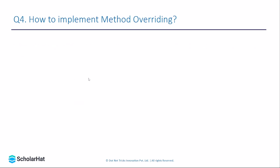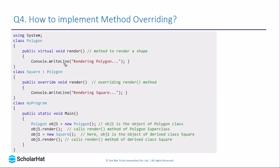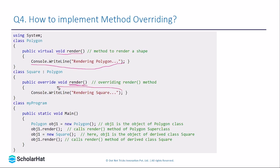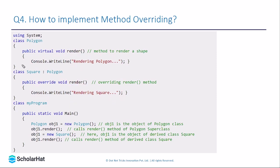Let's check how to implement method overriding in detail. We have created a base class named Polygon and a derived class named Square, linked through inheritance. The base class has a method called Render which displays 'Rendering Polygon' on the console. The child class also has a method named Render. We can force the compiler to execute the derived class method instead of the base class method.